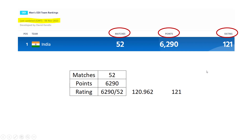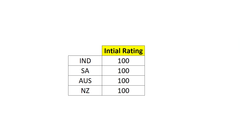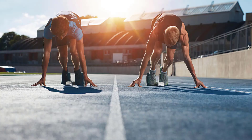If we want to build a rating system, ICC would have done the same when they initially started. You have to start somewhere. For example, I'll take four teams — India, South Africa, Australia, and New Zealand — and assign an initial rating of 100 for every team. Why the same for every team? It's like a running race where everyone starts at the same starting position.